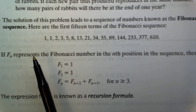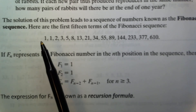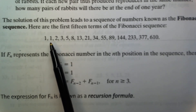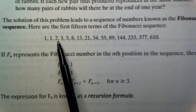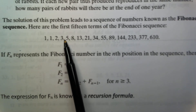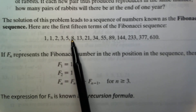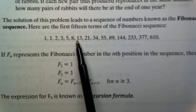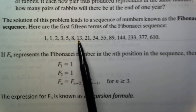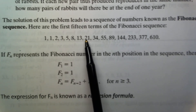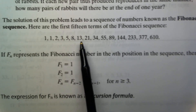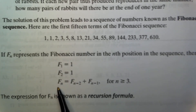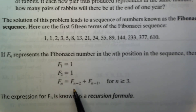Basically, you add the previous two terms: 1 plus 1 is 2, 1 plus 2 is 3, 2 plus 3 is 5, 3 plus 5 is 8, 8 plus 13 is 21, and so on. You always add the previous two terms to get the next one, and that is generalized in this recursion formula.